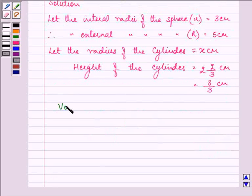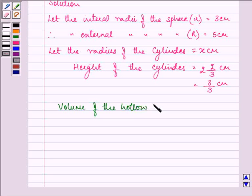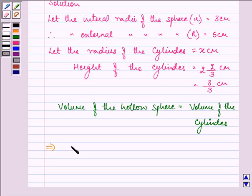We are given that the volume of the hollow sphere is equal to the volume of the cylinder. So, volume of the hollow sphere is 4/3 π(R³ - r³). And that is equal to the volume of the cylinder, that is πr²h, so πx² × 8/3.